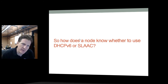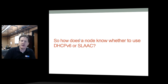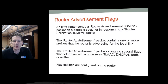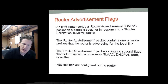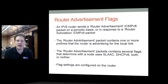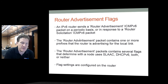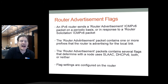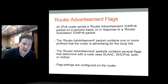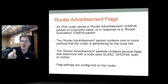How does a node know whether to use DHCPv6 or SLAAC? This is determined by router advertisement flags. When a node sends a solicitation and a router advertisement comes back, the advertisement contains flags that determine whether to use SLAAC, DHCPv6, both, or neither. These flags are configured on the router.